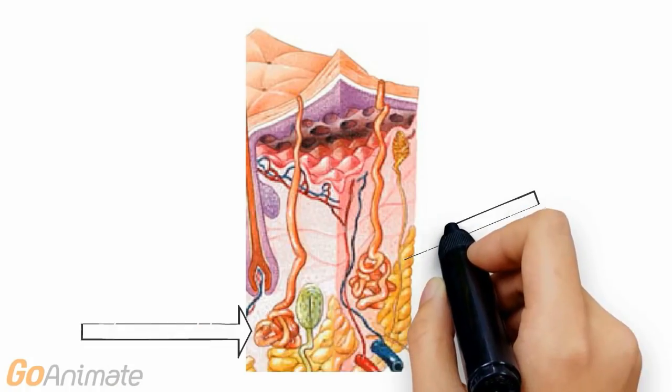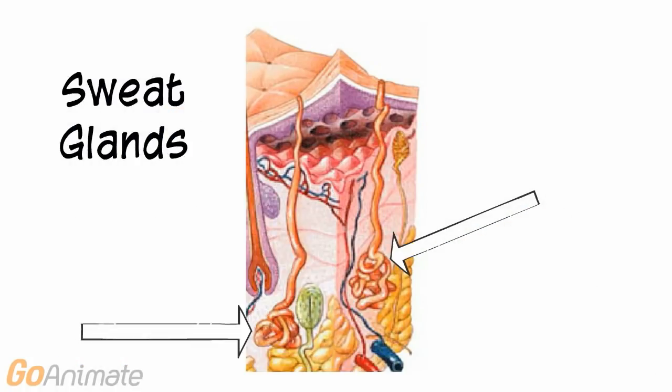Sweat glands or sudoriferous glands are also located in the dermis. There are two types of sweat glands. Apocrine sweat glands secrete their substances into the hair follicles. The secretions of apocrine glands can develop an odor. The odor can increase because the secretion acts as a nutrient for bacteria that enhance the odor. Apocrine glands begin to secrete substances at puberty and are located in the axilla and genital regions.